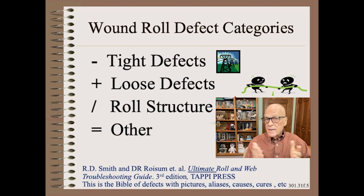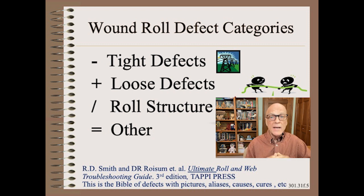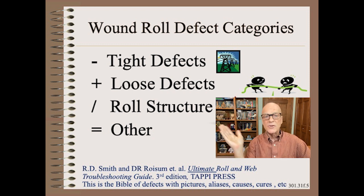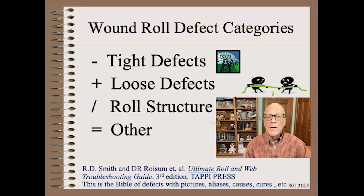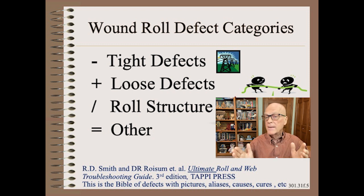Despite the complexities in the details, there are a few principles that can help guide you and get you started. The first is to note that most winding defects can be broken into four mutually exclusive categories: tight, loose, roll structure or taper in converting language, and the very wide other category. The other category includes many machine design, maintenance, and operational errors, as well as product design errors.